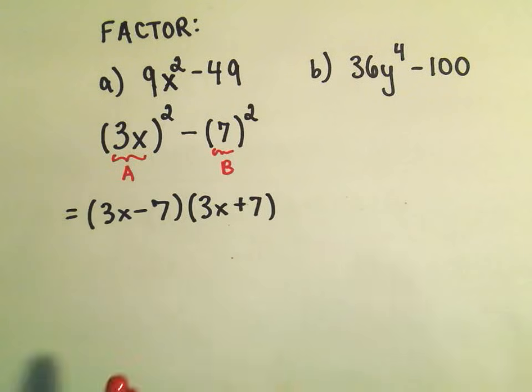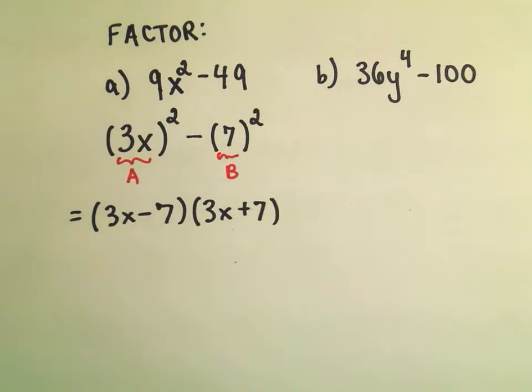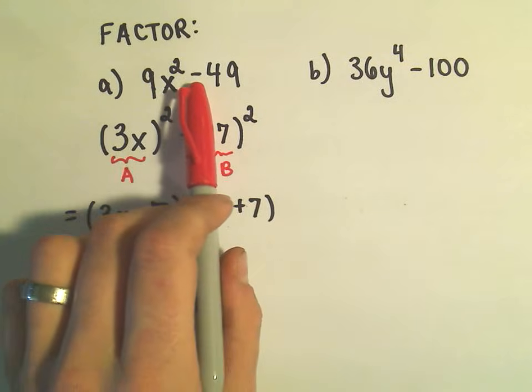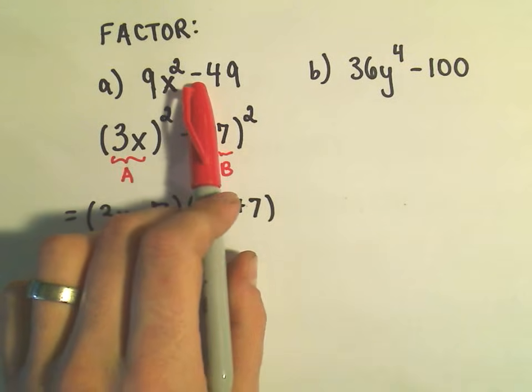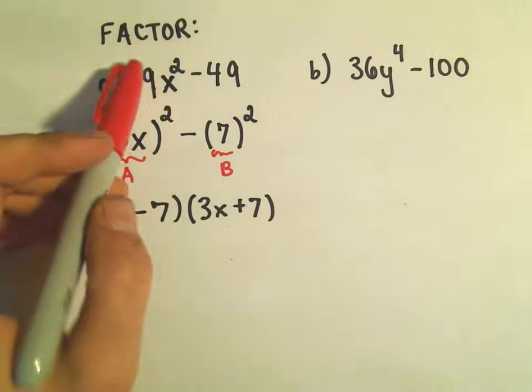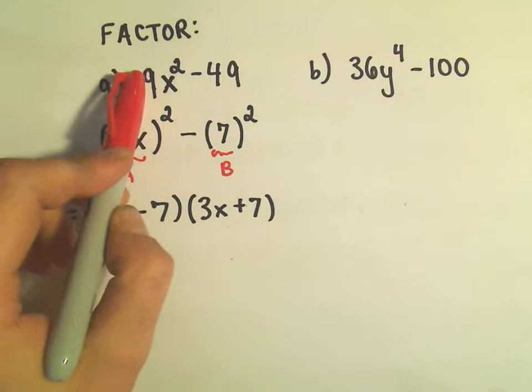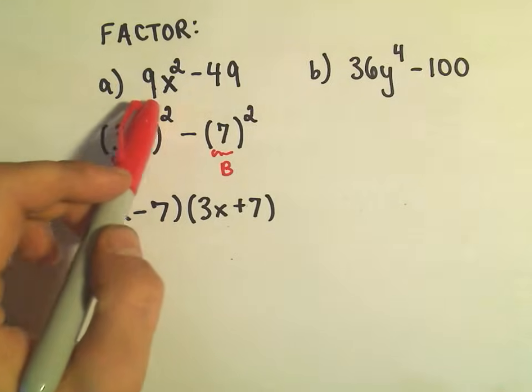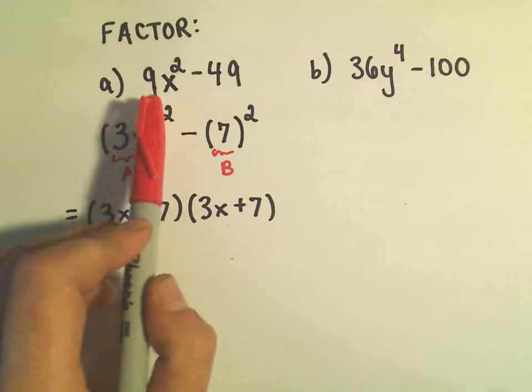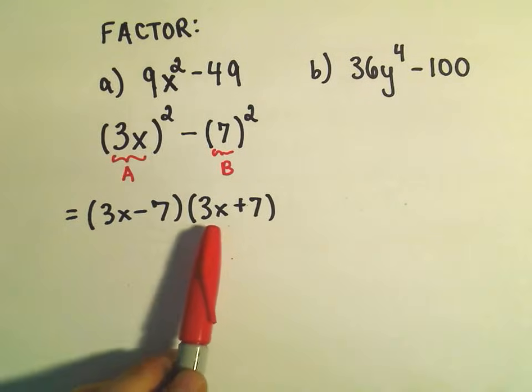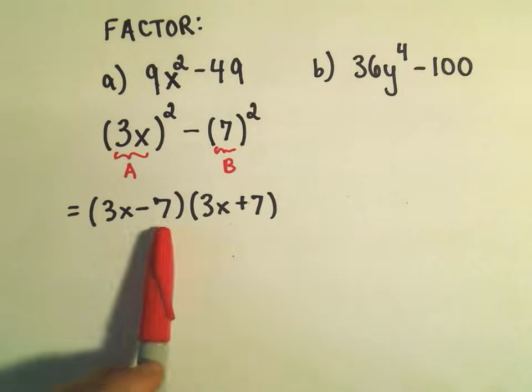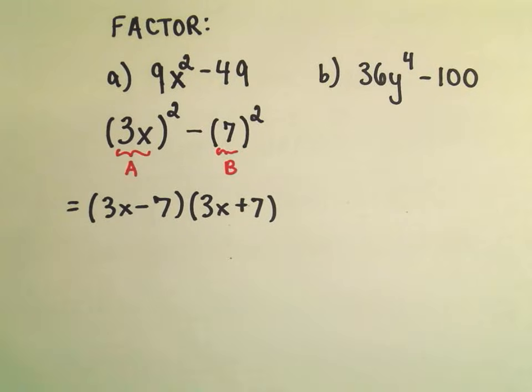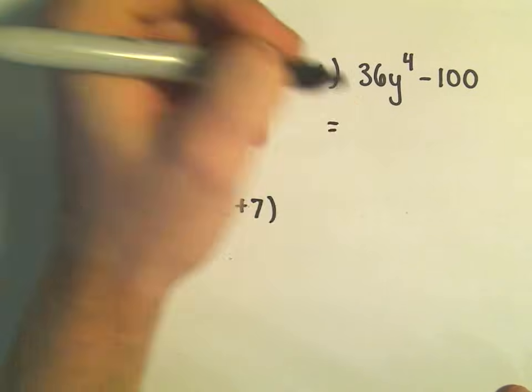Typically what I always do, kind of the shortcut, the way I think about it, anytime I see something with two terms, if there's a minus in between them, it always factors. Basically, I just take the square root of the first term, which would be 3x and 3x, and the square root of 49 will just be 7 and 7, and then I just stick a minus and a plus in between them. So maybe we can do kind of the same idea on this one.